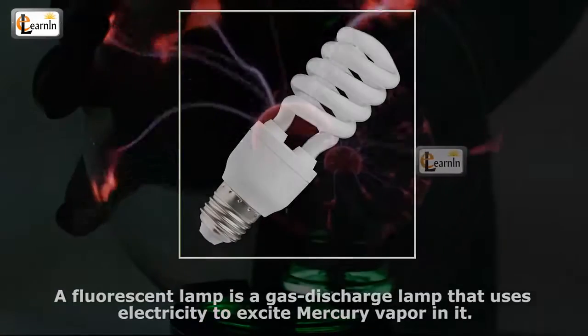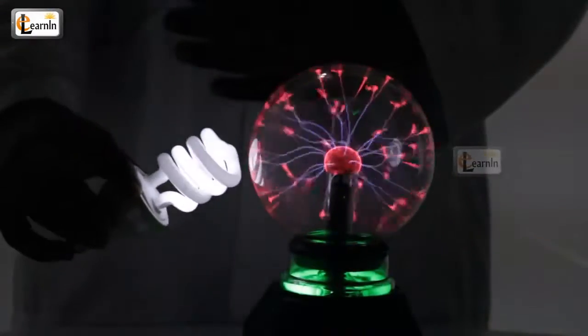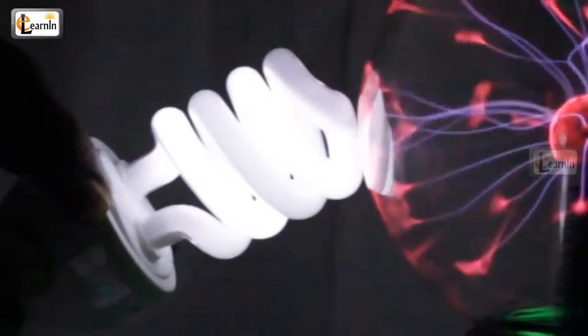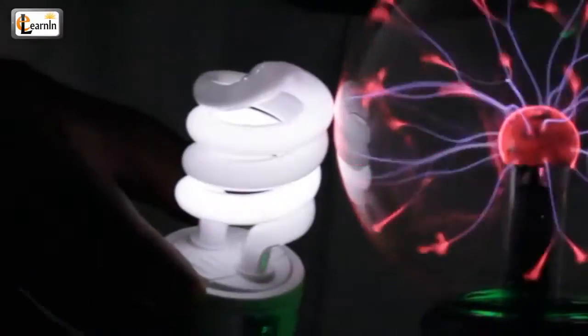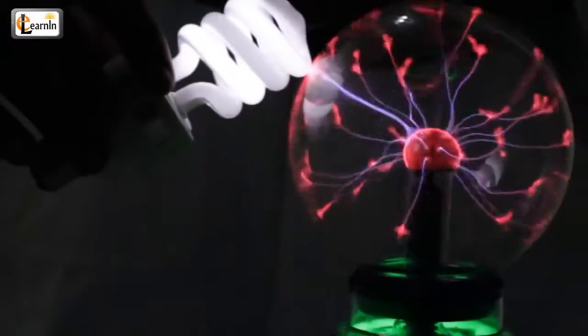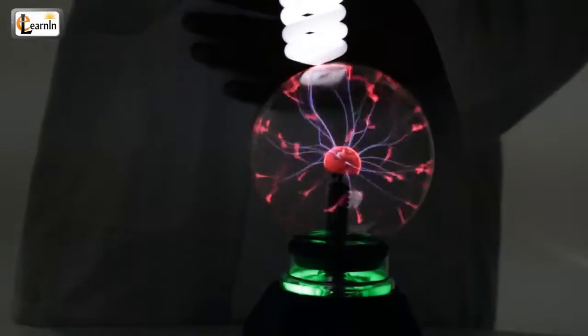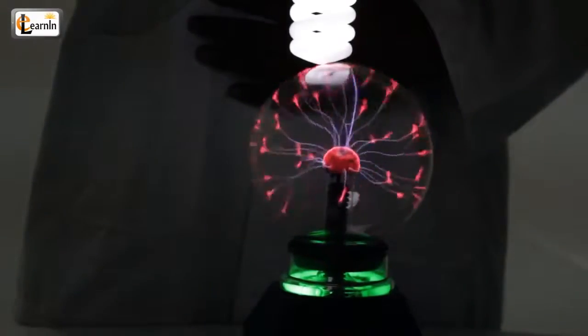When the fluorescent bulb is brought near the glowing plasma lamp, the high frequency current reacts with the mercury present in the fluorescent lamp. The excited mercury atoms produce shortwave ultraviolet light that then causes a phosphor to fluoresce, producing visible light.